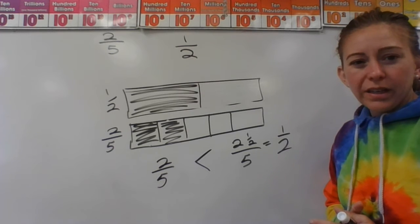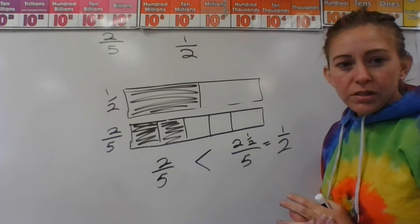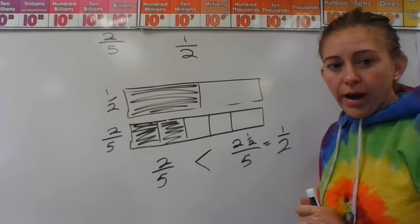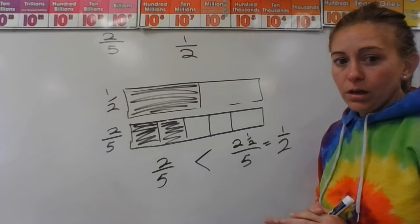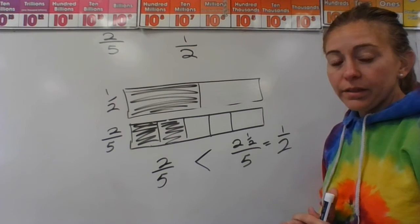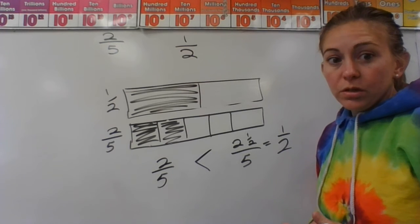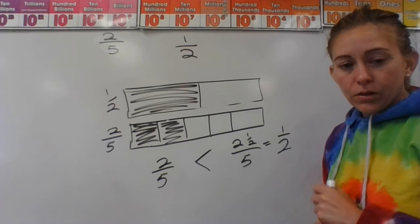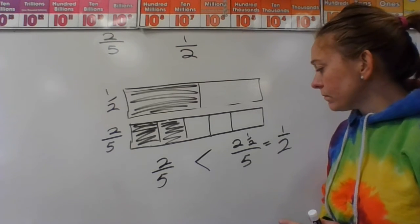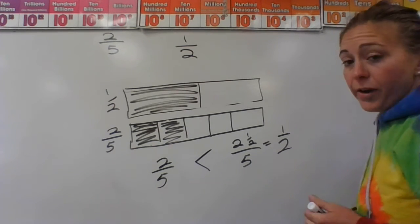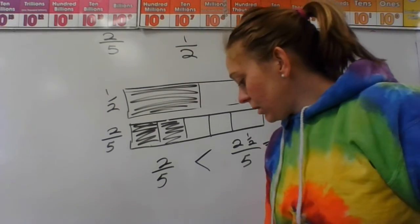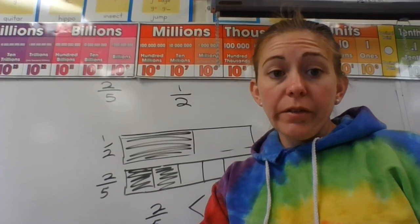On your choice board today, it wants you to choose eight fraction cards. Since I can't send fraction cards home, just choose eight fractions. I'd encourage you to choose some with odd numbers in the denominator and some that are close to one half to really make you think. If you want to check your work, you can use division — remember, a fraction is really just division, so two fifths is two divided by five. If you get a number bigger than one half you'll know. If you have any questions, let me know, we're here for you.